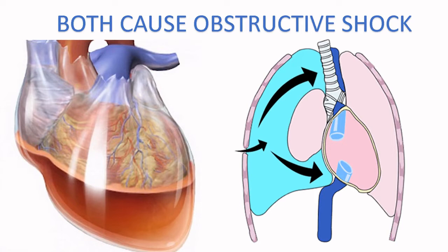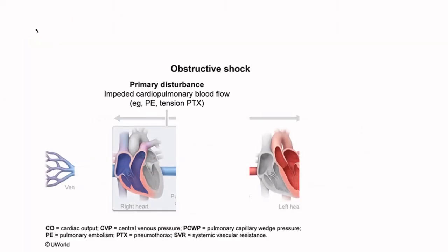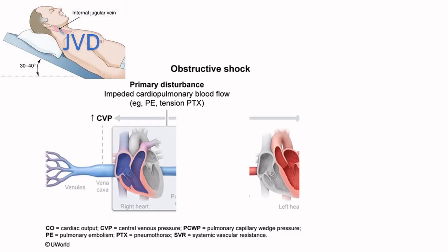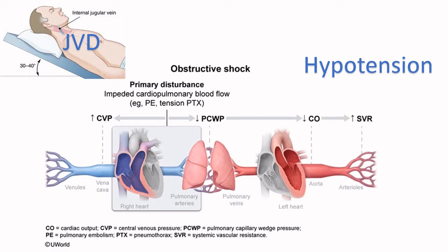In tamponade, there's a lot of fluid around the heart so the right heart cannot fill, causing obstructive shock. In tension pneumothorax, there's a lot of air around the heart, again preventing filling and leading to obstructive shock. Because the right heart cannot fill properly, blood backs up in the vena cava, increasing central venous pressure and causing jugular venous distension. Blood cannot move forward to the left heart, causing shock and hypotension due to decreased cardiac output. So both tamponade and tension pneumothorax present with JVD and hypotension.